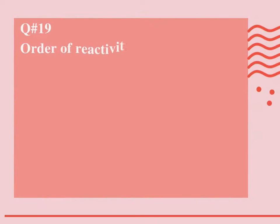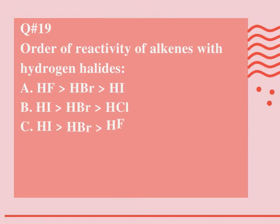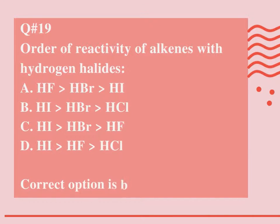Question number 19. Order of reactivity of alkenes with hydrogen halides: A. HF > HBr > HI. B. HI > HBr > HCl. C. HI > HBr > HF. D. HI > HF > HCl. Correct option is B.